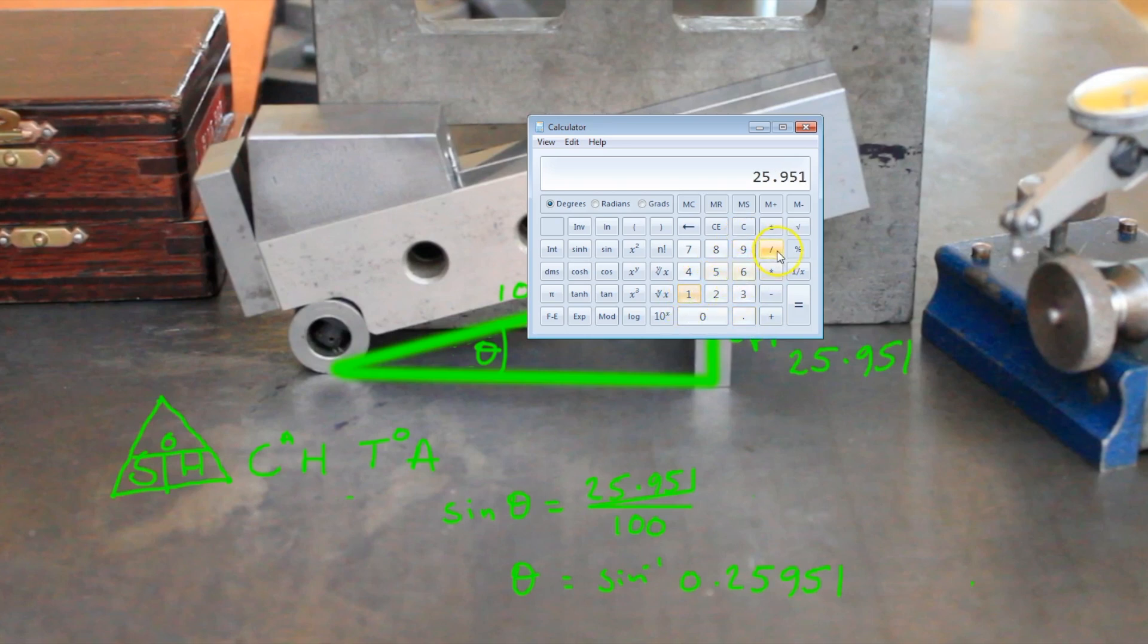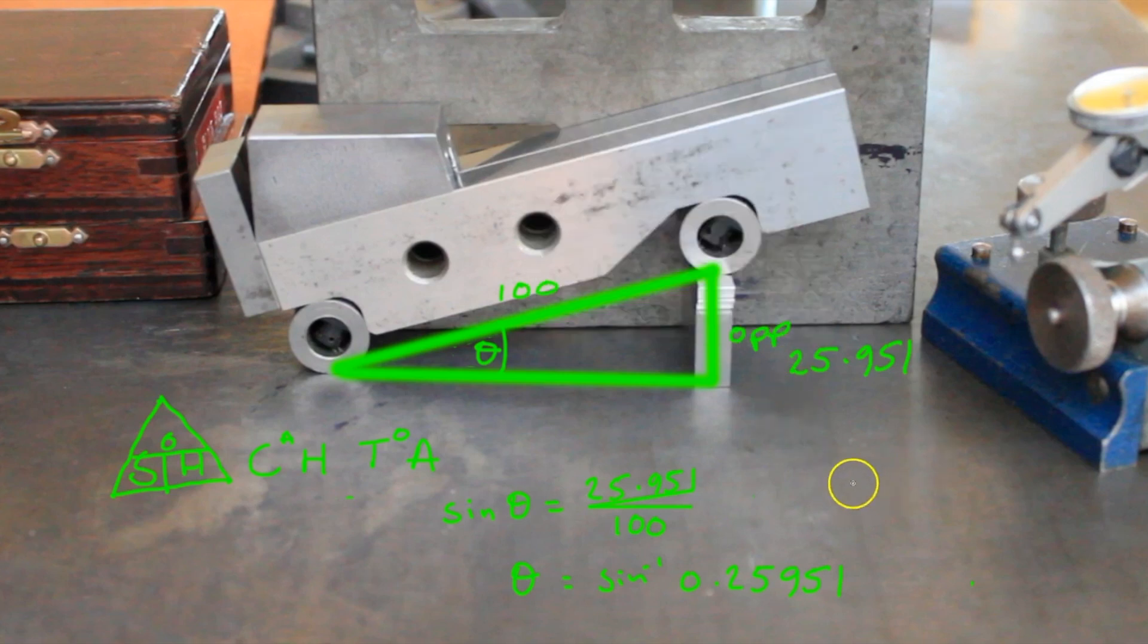25.951 divided by 100. So the angle that we've actually inspected there isn't 15 degrees, but 15.041, which is amazing considering with so little equipment we've managed to inspect to a thousandth of a degree.